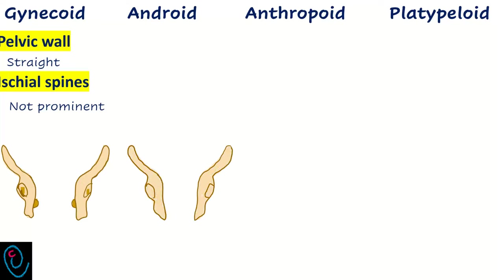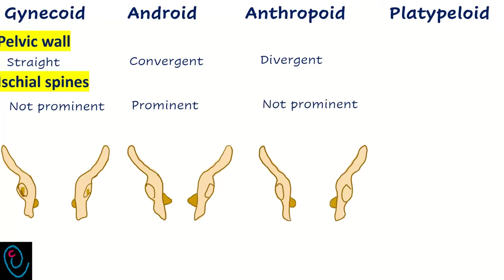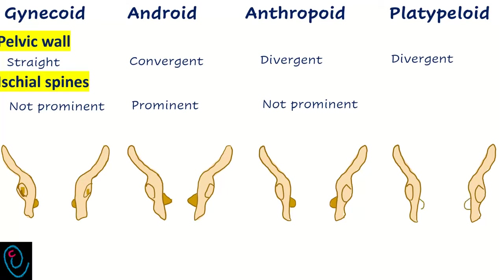In android pelvis, the pelvic walls are convergent, which makes internal rotation more difficult and increases the risk of persistent occipital posterior position. In anthropoid pelvis, the pelvic walls are divergent and the ischial spines are not prominent, so anterior rotation usually occurs late on the perineum.